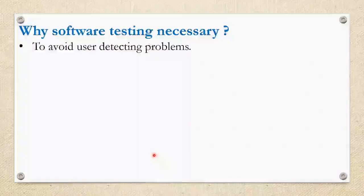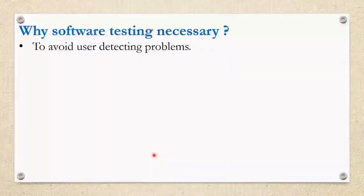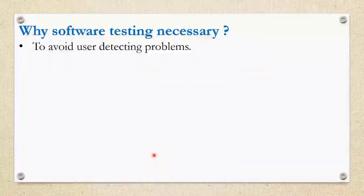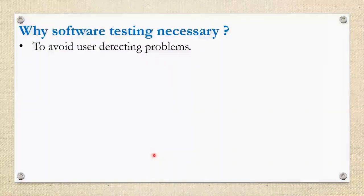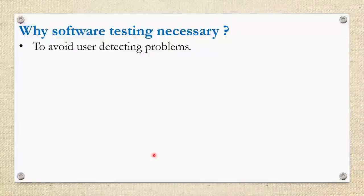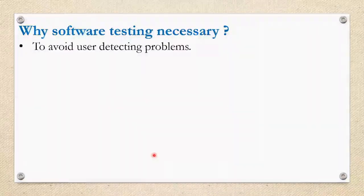Next is to avoid users detecting problems. As a software developer or software tester, your job is to find the defects before the customers find them. The customer should not have to call you or tell you that there are defects or problems in the software or that the software is not working. You should avoid that — that's why you need to test the software.